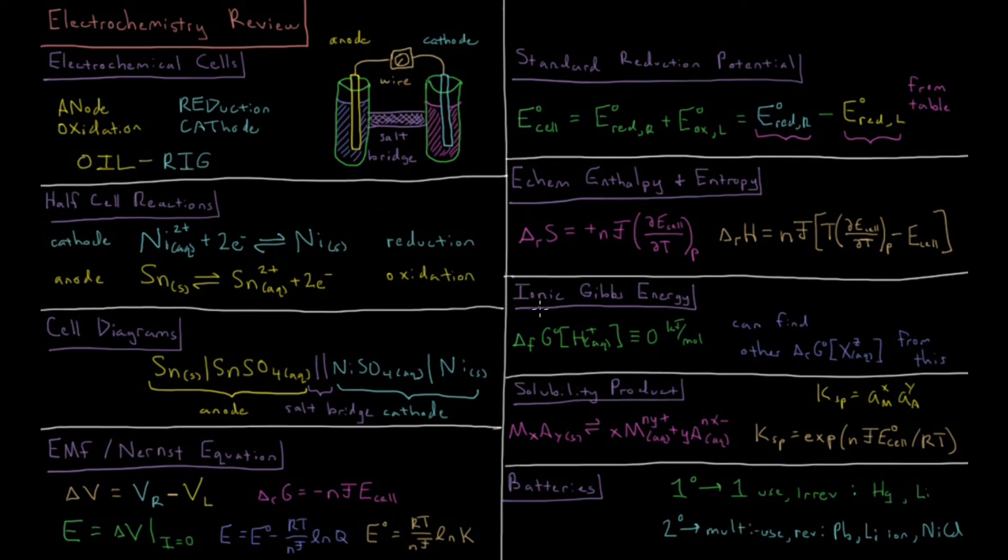We can also define in electrochemistry the standard enthalpy of formation of various ions. This comes from defining the standard enthalpy of formation of an aqueous hydrogen ion to be zero. By defining the standard state of an aqueous hydrogen ion to be zero, we can make measurements and find out the Gibbs energy of formation for any other type of ion.